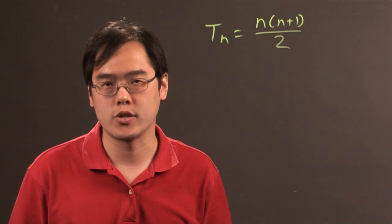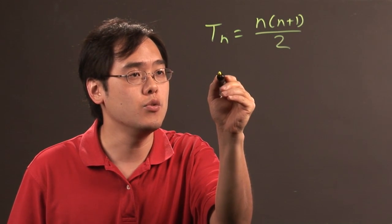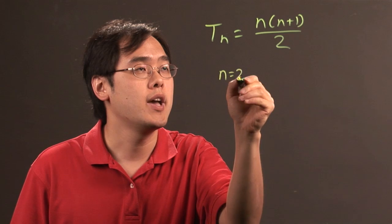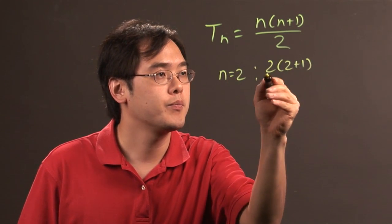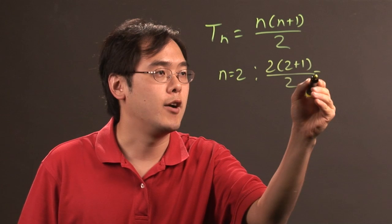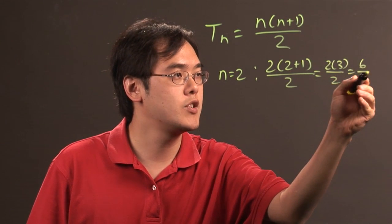Now, for example, if you wanted to find the number of objects required to have each side of length 2, you will let n equal 2 and plug it in. So you have 2 times 2 plus 1 over 2. Now, 2 plus 1 is going to be 3, so 2 times 3 over 2, which is going to be 6 over 2,